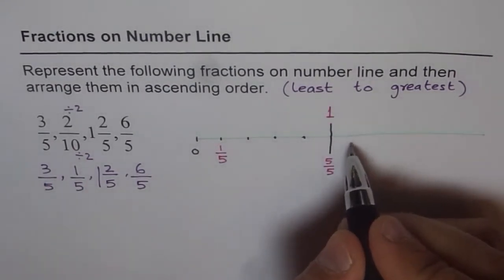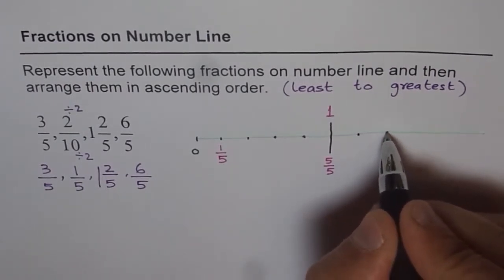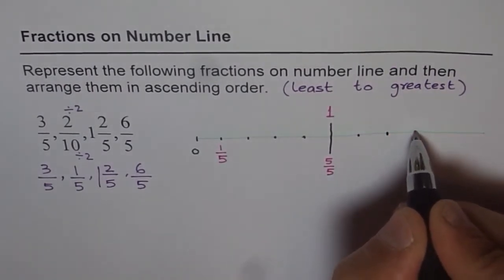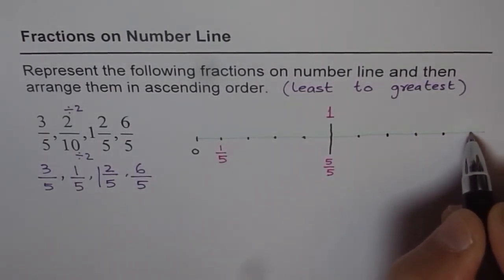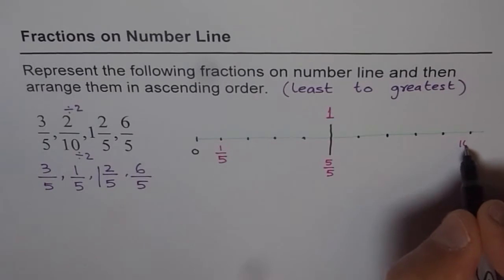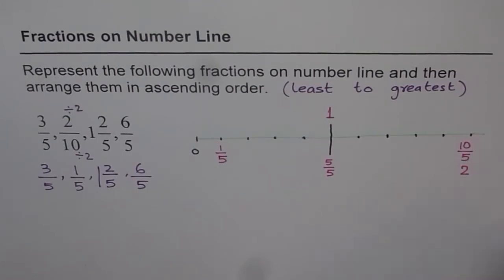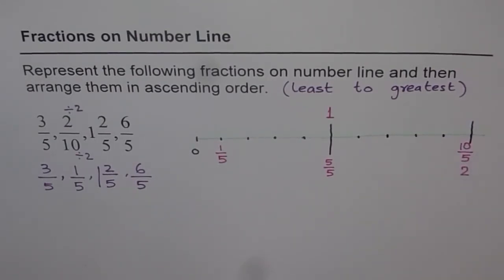And then let's move forward. What will come next? After 5, 6 out of 5, 7 out of 5, 8 out of 5, 9 out of 5 and then 10 out of 5. Now 10 out of 5 is what? Think about it. 10 out of 5. That means 2. So that is 2. We will draw a bigger line here also and say well this is actually 2 for us.